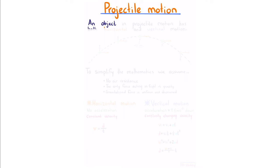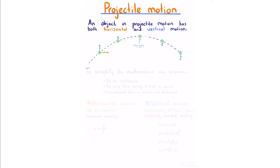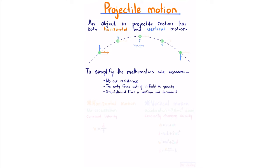Projectile motion. An object in projectile motion has both horizontal and vertical motion. Considering a tennis ball in flight, the blue vertical velocity upwards decreases due to downwards gravitational acceleration until it reaches the peak where vertical velocity is zero, after which it increases downwards. To simplify the mathematics, we assume no air resistance, that the only force in flight is gravity, and that gravitational force is uniform and downwards — meaning horizontal velocity does not change.